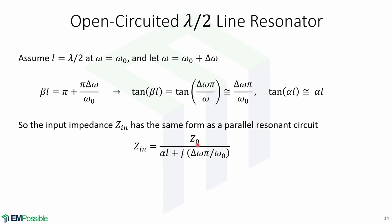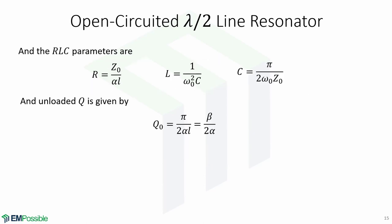Notice that the input impedance has the same form as a parallel resonant circuit. So we can obtain the RLC parameters: R equals Z-0 over alpha*L, inductance L equals 1 over omega-0 squared times C, and C equals pi over 2*omega-0*Z-0. The unloaded Q is also given by beta over 2*alpha.